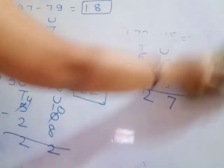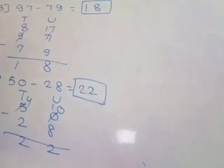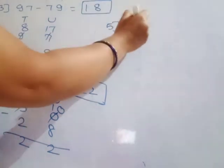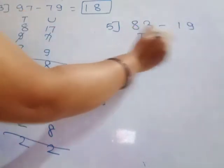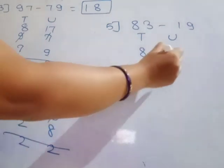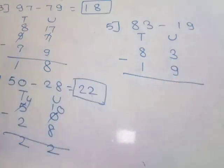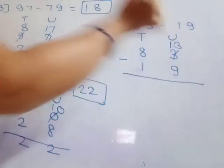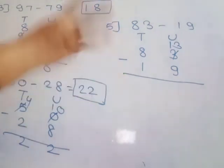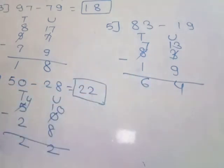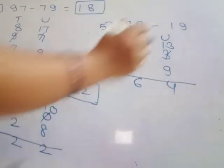One more example: 83 minus 19. Write tens and unit places vertically: 8 and 3 on top, 1 and 9 below. 3 is a small number, so borrow 1, making it 13. 13 minus 9: count up — 9, 10, 11, 12, 13 — that's 4 fingers. Write 4. Tens digit becomes one less: 7 minus 1 equals 6. So 83 minus 19 equals 64.